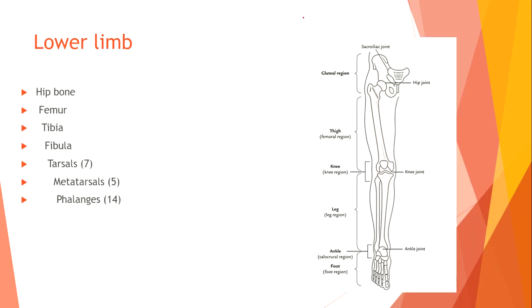Normal anatomy of the lower limb. Key bones include: hip bone, femur, tibia, fibula, tarsals, metatarsals, and phalanges.